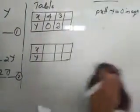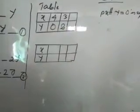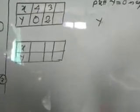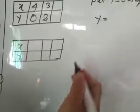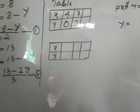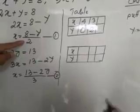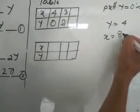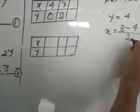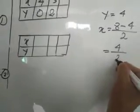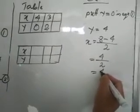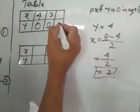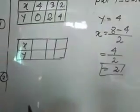So I'm going to wrap this one. For the last value, let's take Y equal to 4. Then X equal to 8 minus 4, which is 4. 4 divided by 2 is 2. When we take Y as 4, X is 2. So table 1 is completed.